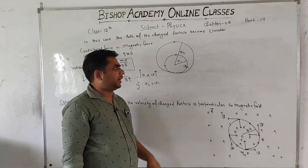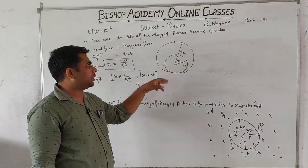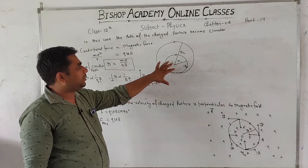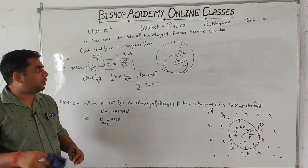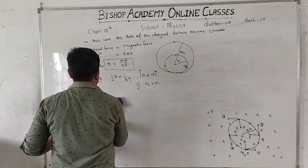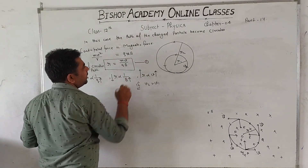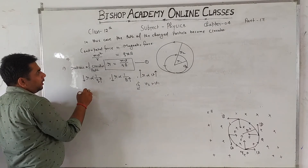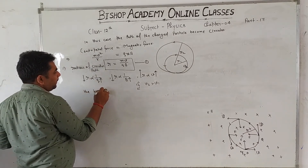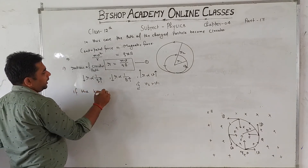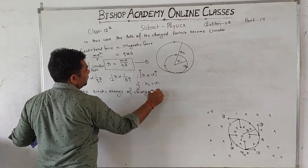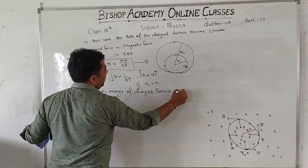Time period पे कोई effect नहीं आता velocity बढ़ाने पर भी — time period unchanged रहता है। क्योंकि जैसे ही velocity बढ़ेगी, circular path का radius भी बड़ा हो जाएगा। If we treat R = mv/qB as equation 1, then we can also express radius in terms of kinetic energy. If kinetic energy of charge particle is K, then K = ½mv², so V = √(2K/M).